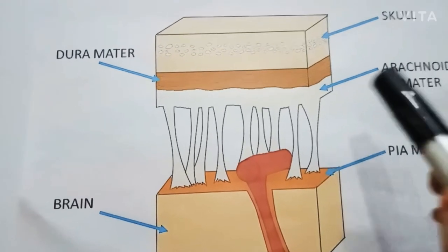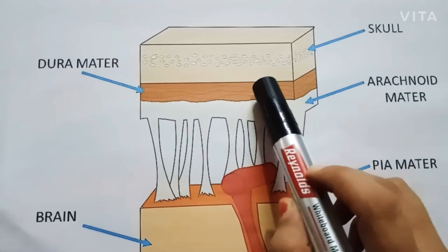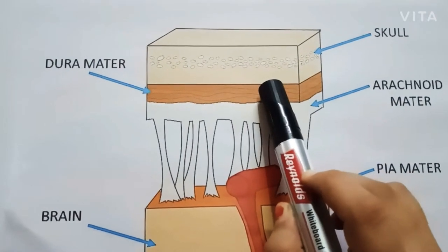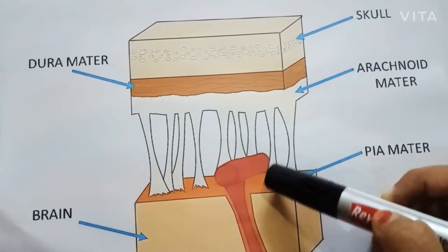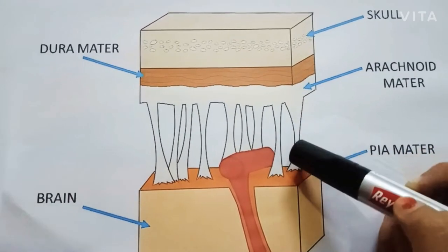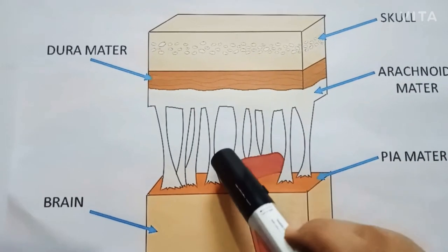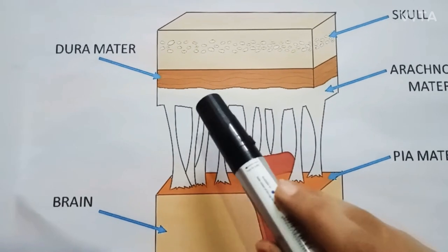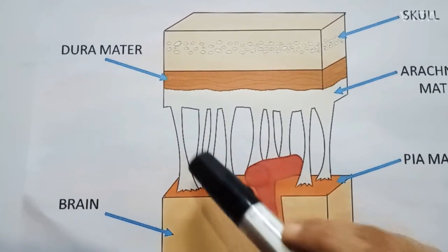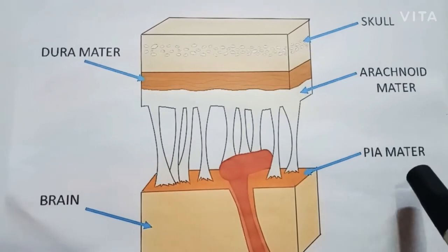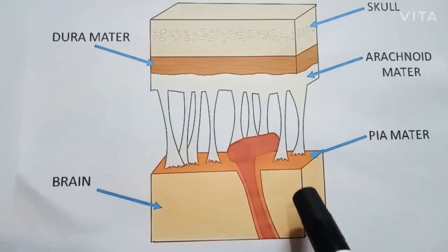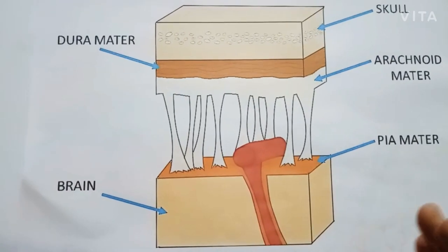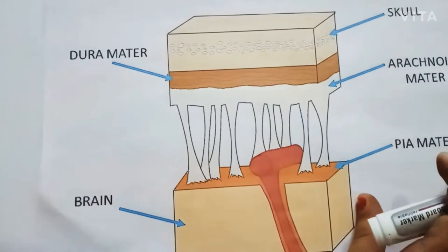In a more defined diagram, you can see: this is your skull bone, then the dura mater layer, then the arachnoid matter, and you can see the connective tissue trabeculae extensions — the trabeculae network — connecting down to the pia mater, with the brain substance inside.